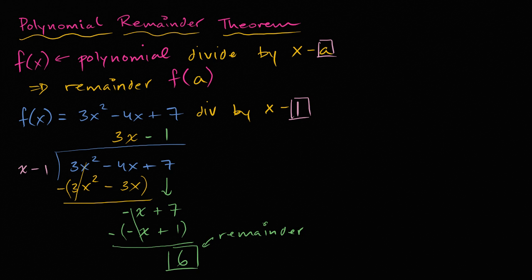And so in this example, we could have rewritten what we just did as our f of x. So we could have said 3x squared minus 4x plus 7 is equal to x minus 1 times the quotient, or the quotient times x minus 1. So it's going to be equal to 3x minus 1 times the divisor, times x minus 1. And when you multiply these two things, you're not going to get exactly this.